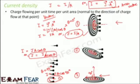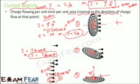Current density is essentially current per unit area. In the definition, 'charge flowing per unit time' is simply current, so current density is current per unit area. The phrase 'normal to the direction of charge flow at that point' applies specifically when the area is perpendicular to the current — as in case one. When the area is inclined at angle theta, that angle also comes into play. The direction of current density is along the direction of charge flow.